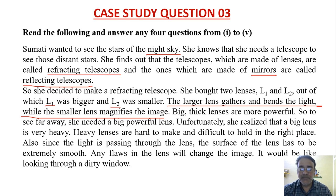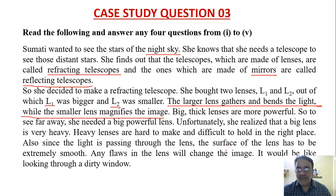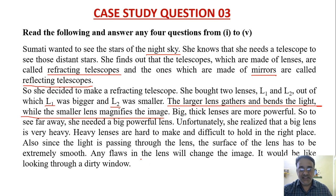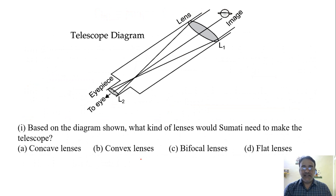Unfortunately, she realized that a big lens is very heavy. Heavy lenses are hard to make and difficult to hold in the right place. Also, since the light passes through the lens, the surface has to be extremely smooth — any flaws will change the image, like looking through a dirty window. This is the context, and a telescope diagram is also given.